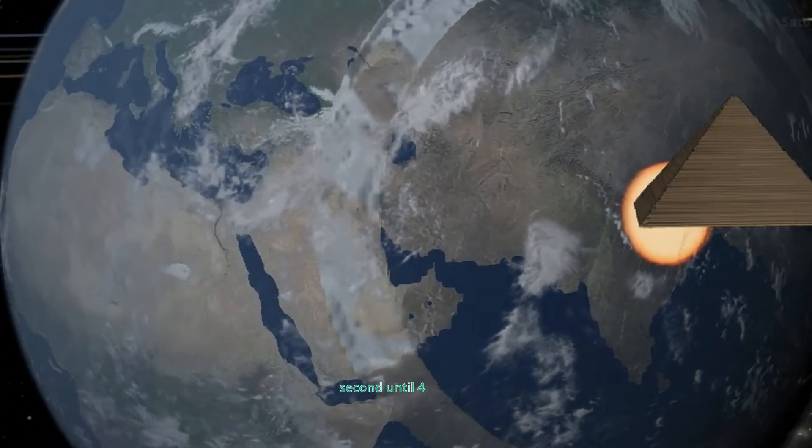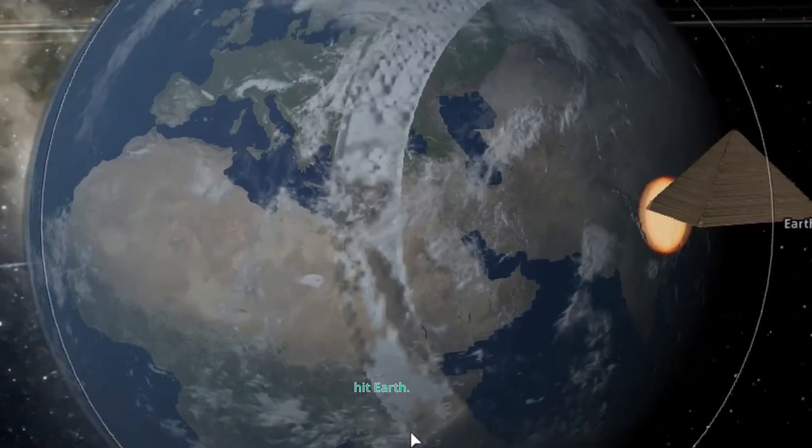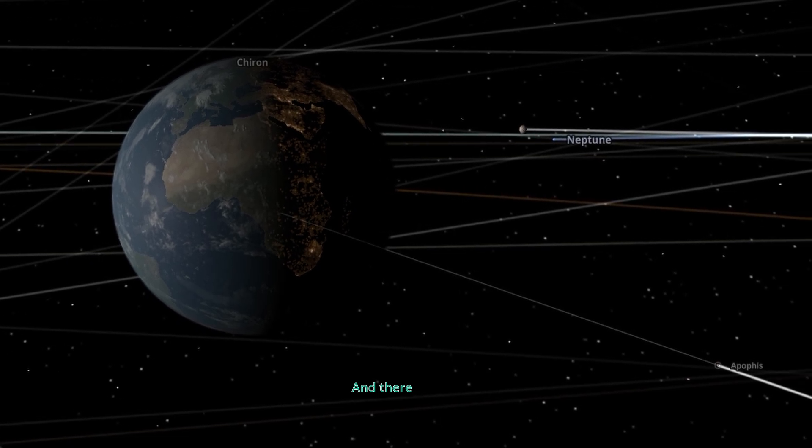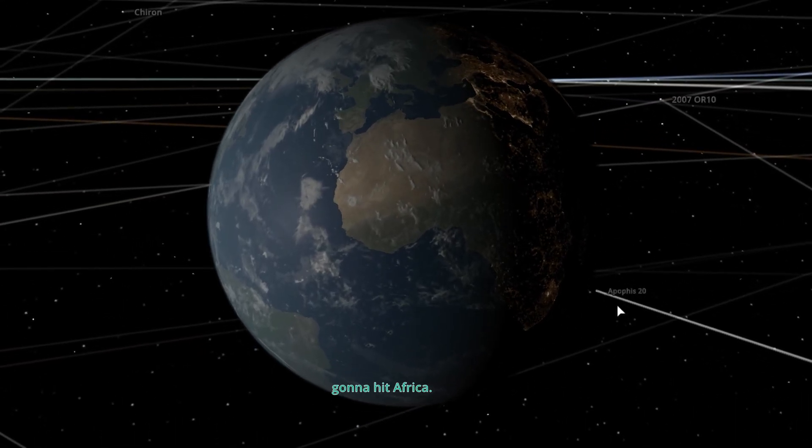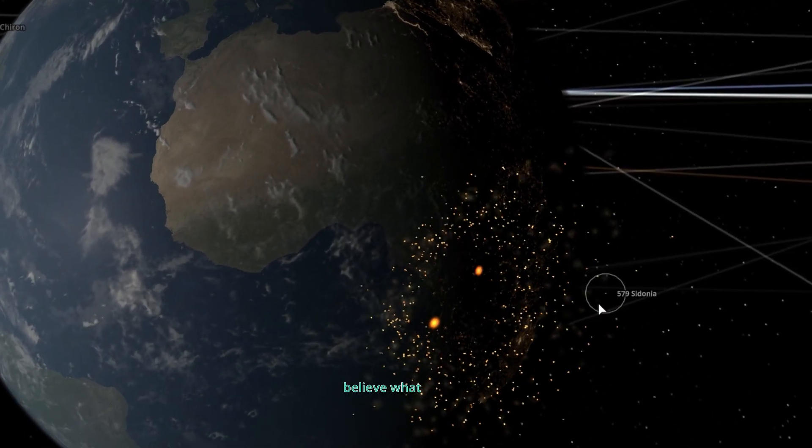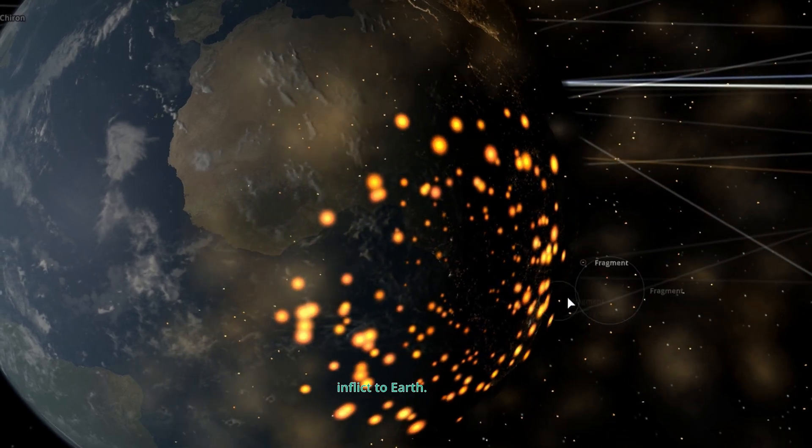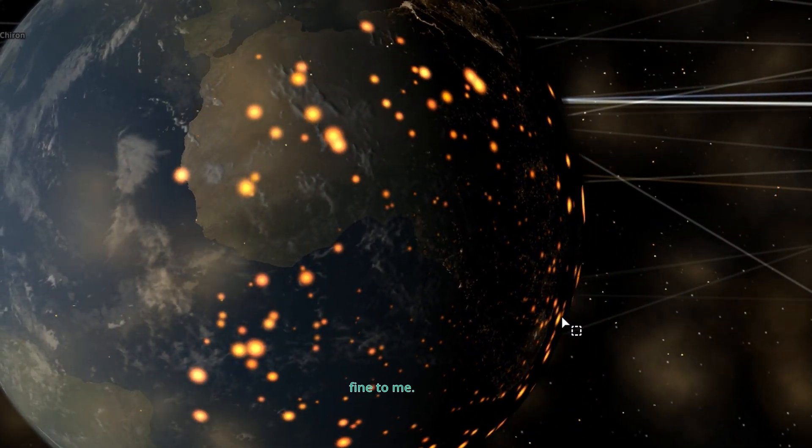Asteroids from 20 kilometers per second until 4 million kilometers per second are going to hit Earth. Let's start with 20. And there it goes. It seems it's going to hit Africa. You can never believe what damages last two asteroids are going to inflict to Earth. All in all, everything looks fine to me.